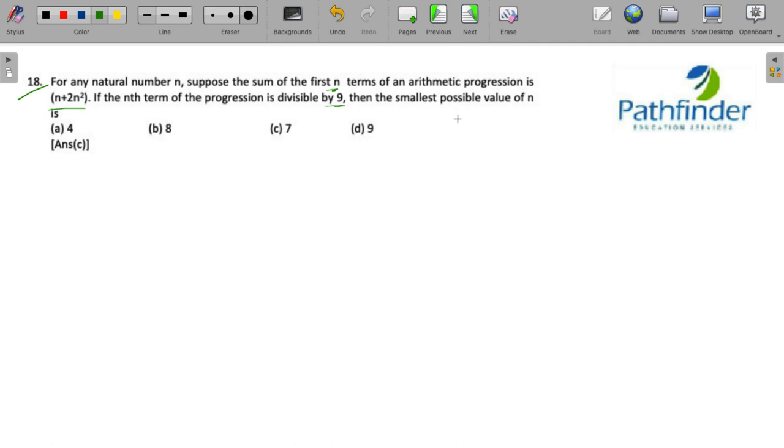We are required to calculate the smallest possible value of n such that the nth term of this progression is divisible by 9. First of all, sum to n terms is n plus 2n squared. This fact is given to us.